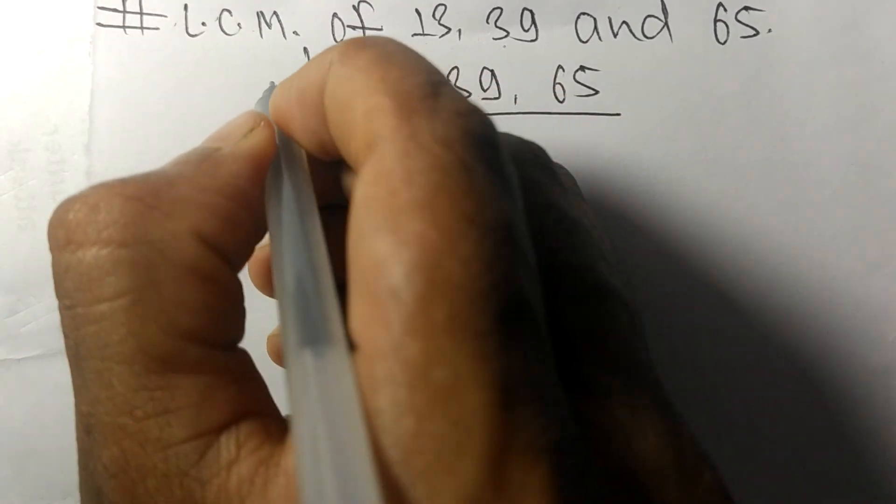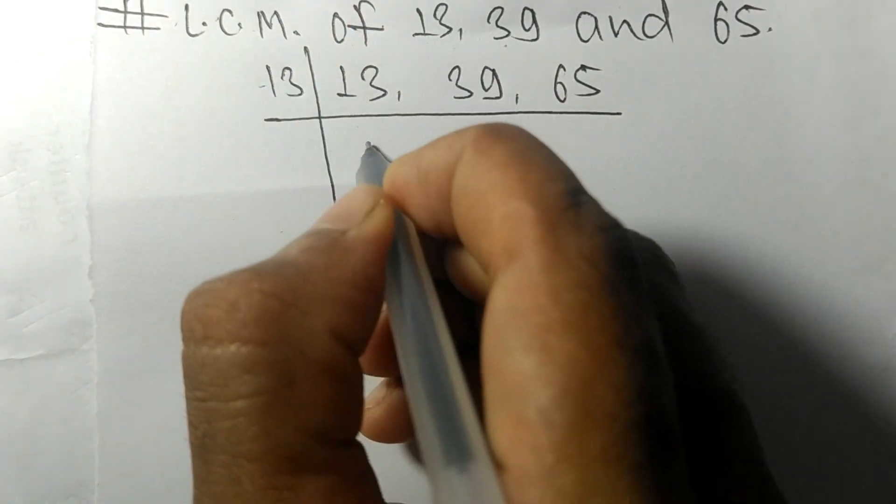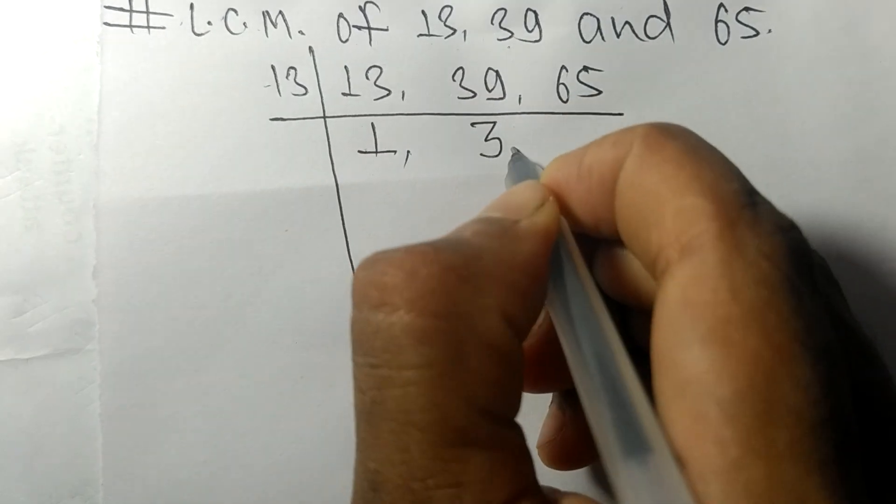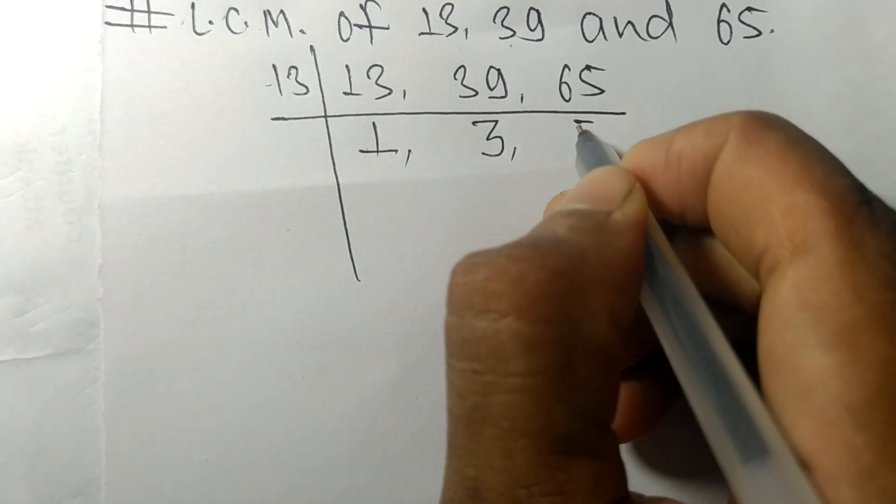These all numbers are divisible by 13: 13 times 1 equals 13, 13 times 3 equals 39, 13 times 5 equals 65.